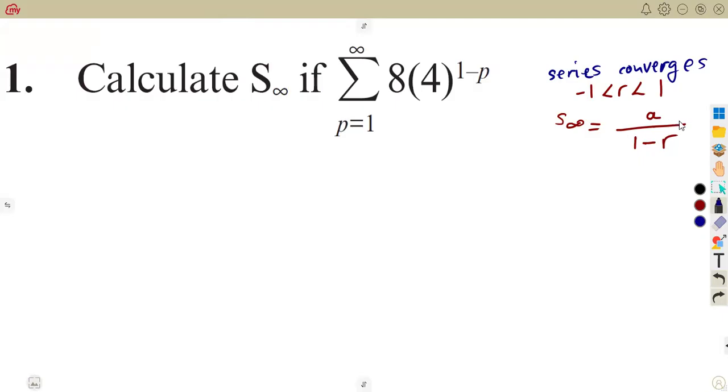The first term can be determined by substituting. The first term, when p is equal to 1, we substitute T1. We substitute in place of p a 1, so that's 8 into 4 to the exponent of 1 minus 1, which is going to give us 8. We do the same thing for T2, that's 8 into 4 to the exponent of 1 minus 2, which gives us 2.